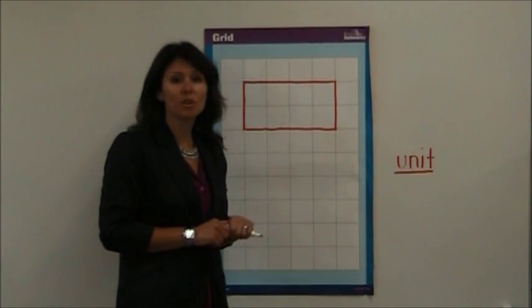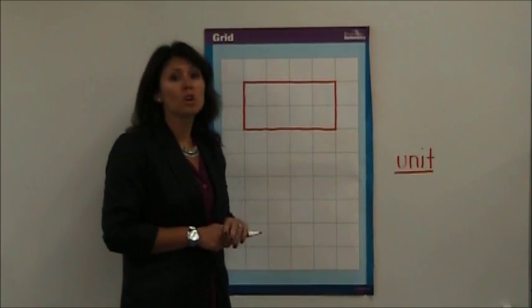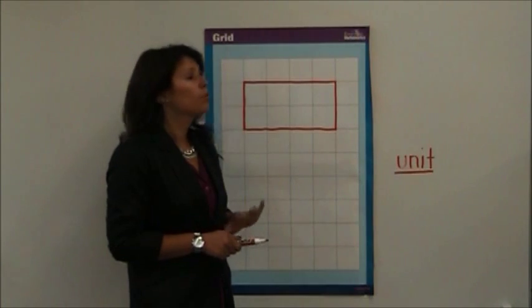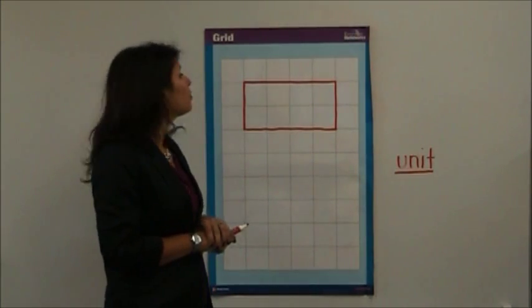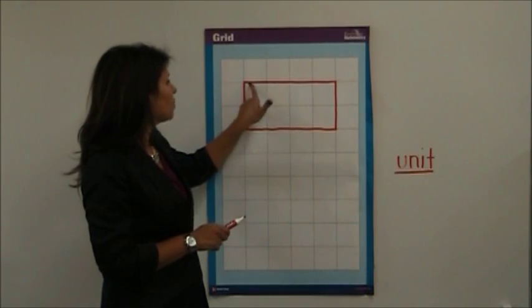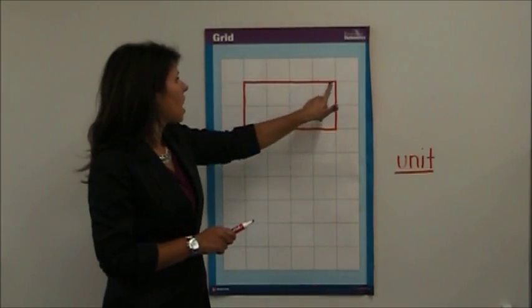Today's lesson is on perimeter and area. We're going to start by talking about perimeter. Perimeter is the distance around a shape. To figure out perimeter I would count the distance on the outside.